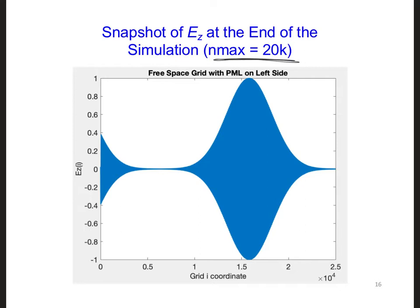If the PML is working well, the pulse propagating to the left of the source should look like it's just propagating right off the grid with no visible reflections.